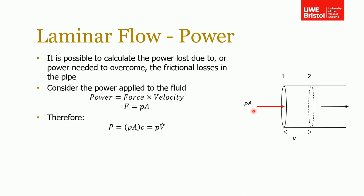The force acting on that fluid is the pressure times the area. We can substitute that in, so we get pressure times area times velocity. We know that the area times the velocity through that area is the volumetric flow rate. Therefore, the power for the flow can be written as the pressure times the volumetric flow rate.